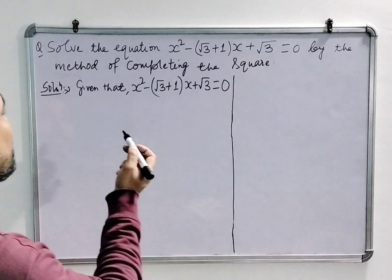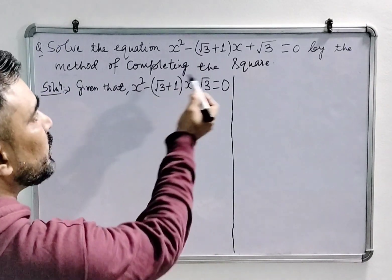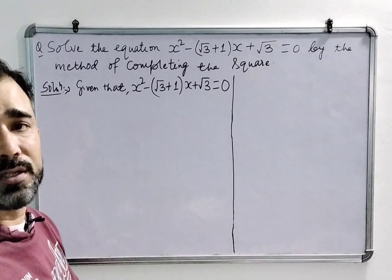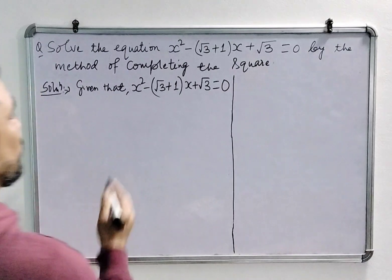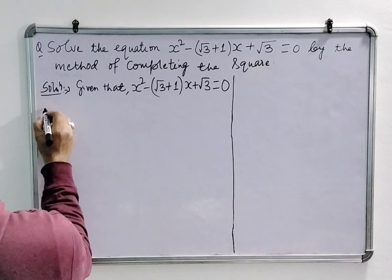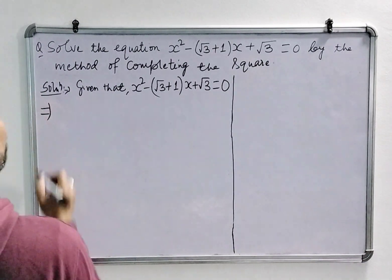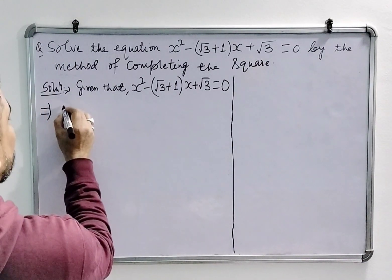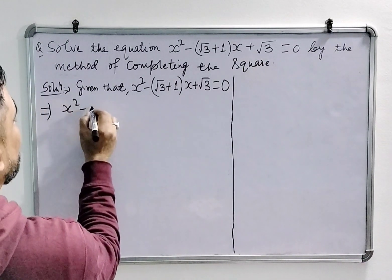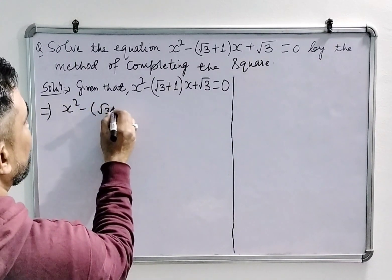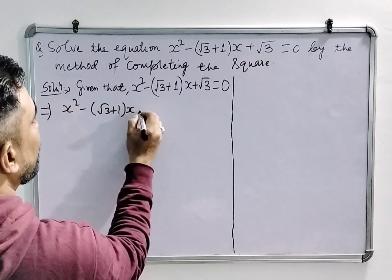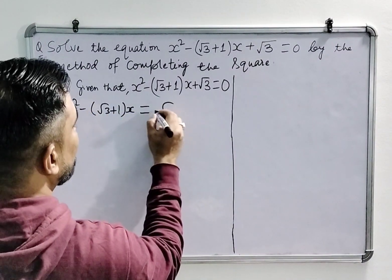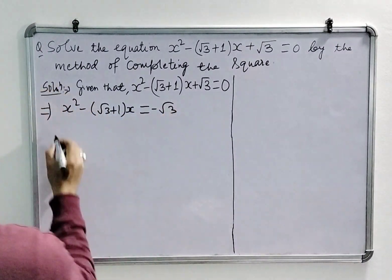Welcome students. We have a question here in which we have to solve this equation by using the method of completing the square. While solving this equation, the first step is to shift the constant term to the RHS side.